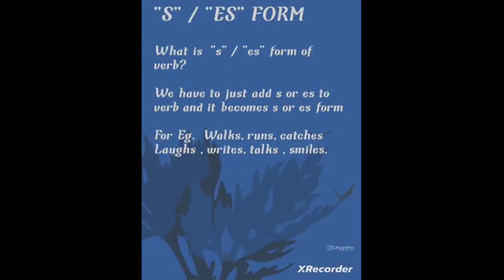The second form is S and ES form. This is not difficult at all — you just have to add S or ES after the base verb. We can't add it anywhere though; we have to think carefully. Examples: walks — the base form is walk. She walks fast, he walks fast, she runs quickly, he catches perfectly — 'catches' is the ES form of the verb. Laughs, writes — 'write' is the base form whereas 'writes' is the S form. Talks and smiles.